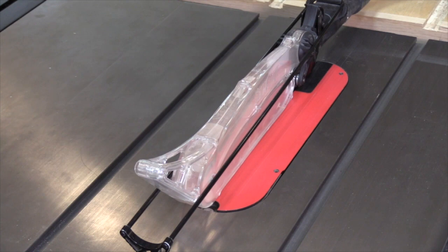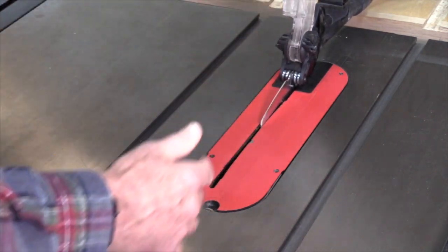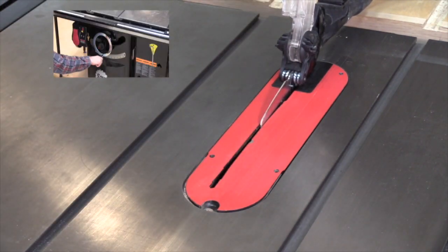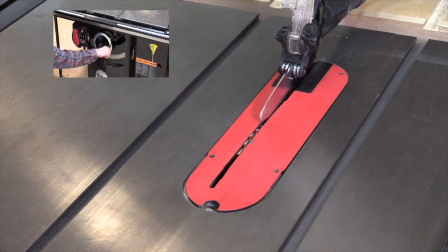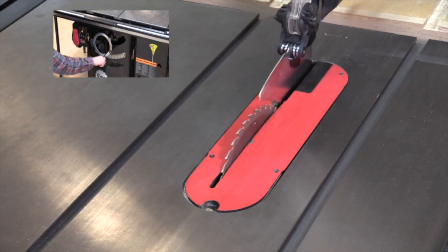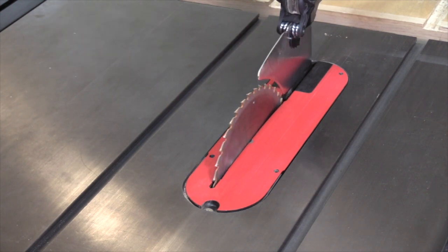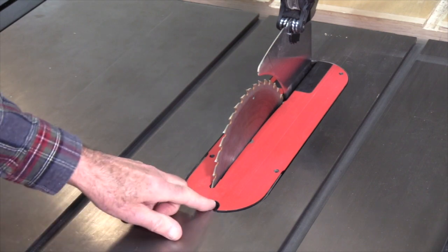To change the blade, first make sure the saw is de-energized. Then the next step is to raise the guard and bring the saw blade to the highest position, which makes it easier to work inside. Remove the insert by lifting this tab in front.